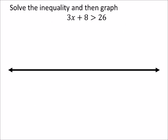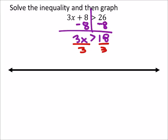Alright, so let's solve this one and then we'll graph it. We're treating this exactly like we would as though it were an equation. The only thing we're worried about is if we ever divide by a negative or multiply both sides by a negative. So right here, I would subtract 8 from both sides. And I got 3x is greater than 18. And then divide both sides by 3, and I get x is greater than 6.